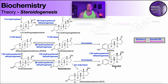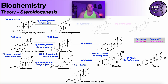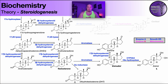Estrone and estradiol can be interconverted via 17-beta-hydroxysteroid dehydrogenase, but estradiol has the strongest estrogenic activity. There is one more conversion: CYP3A4, also known as 16-alpha-hydroxylase, takes estradiol and hydroxylates it to form estriol. In non-pregnant individuals, estriol levels in blood are negligible, but during pregnancy estriol concentration rises sharply. The exact function of estriol is not fully known — it may interact with the developing fetus or act as a way to partially deactivate estradiol.